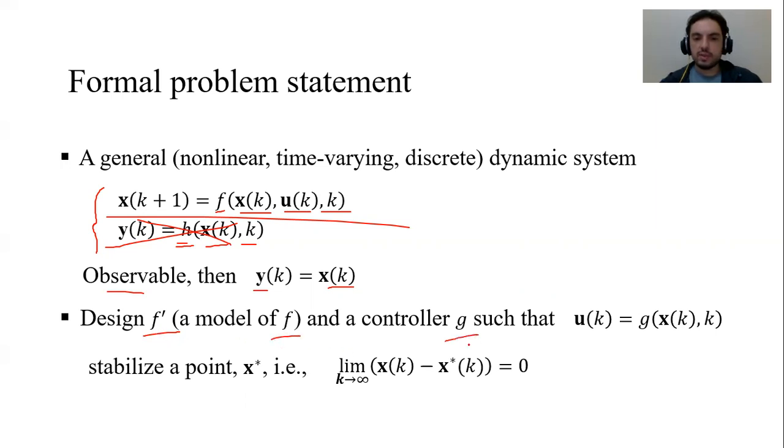From F prime, we want a controller G that will inject control signals in the original dynamic system and lead the states to wherever you want. This is called the regularization problem. We want to stabilize a fixed point of the dynamic system X star.